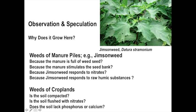When you see weeds, there's an opportunity. Farmers spend a lot of time in the field and have a lot of time to think — this is why they're very innovative. Observe, for example, weeds growing on a manure pile such as jimson weed, which universally seems to grow on manure piles. The question is: is it because the manure is full of weed seed? Does it stimulate the seed bank? Does jimson weed respond to nitrates or humic substances? With crop plant weeds, are they growing because the soil is compacted? Is the soil flush with nitrates? Does it lack phosphorus or calcium? Over time, you may develop a pattern and use those observations as a tool for managing weeds and making adjustments to your soil management program.